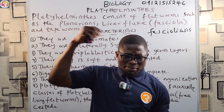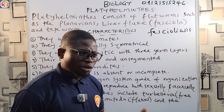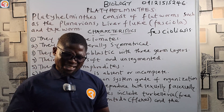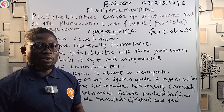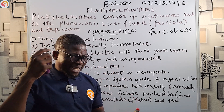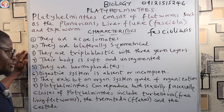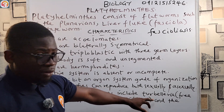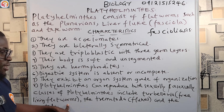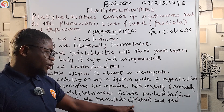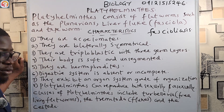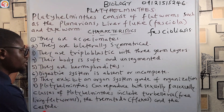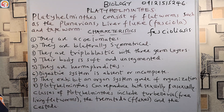Platyhelminthes can reproduce both sexually and asexually. Sometimes, due to the lack of mating partners, they use their penile appendage to stab themselves in the head and inject sperm for self-fertilization. The three classes of Platyhelminthes are: Turbellaria — the free-living flatworms; Trematoda — the flukes; and Cestoda — the tapeworms.